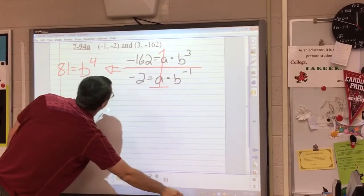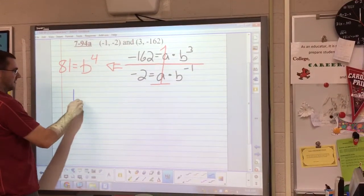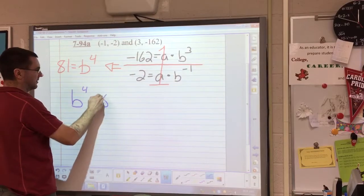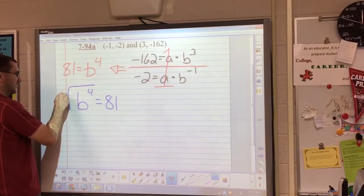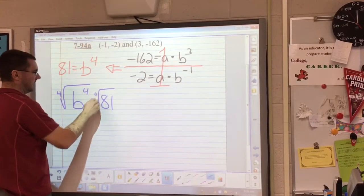So then you have to solve b to the fourth power equals 81. There are two methods for solving this. You could take the fourth root of both sides and find that in your calculator.